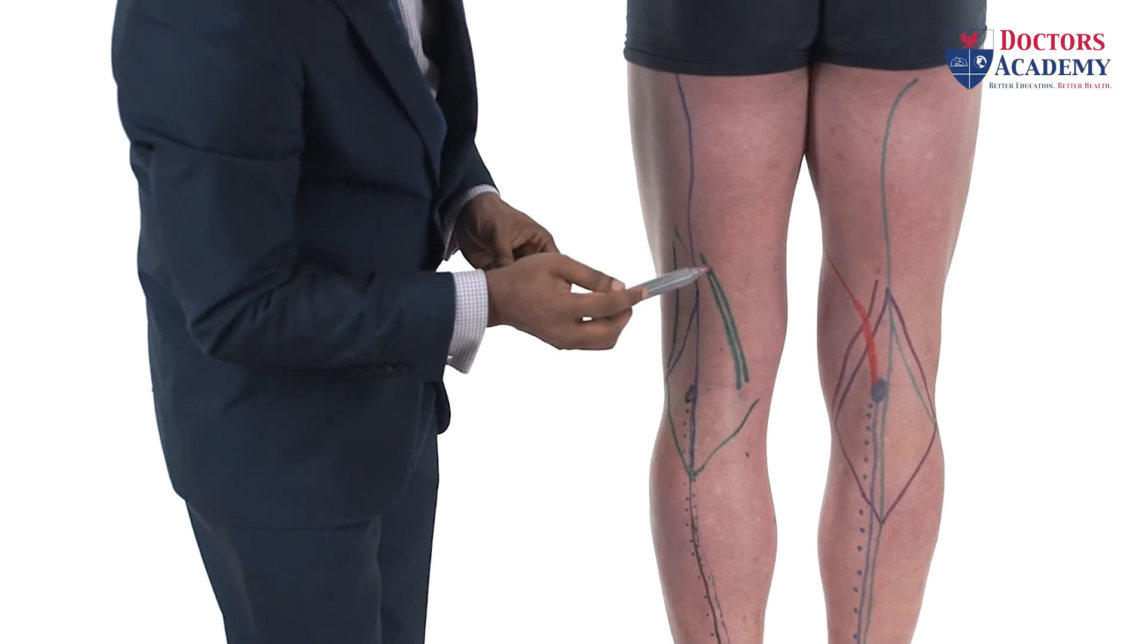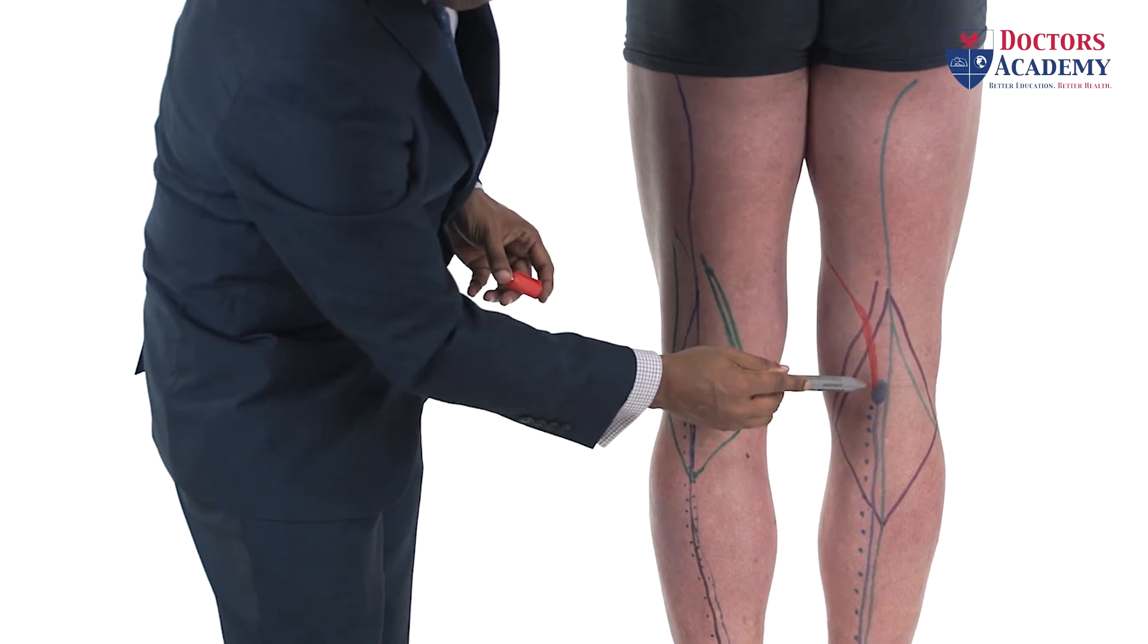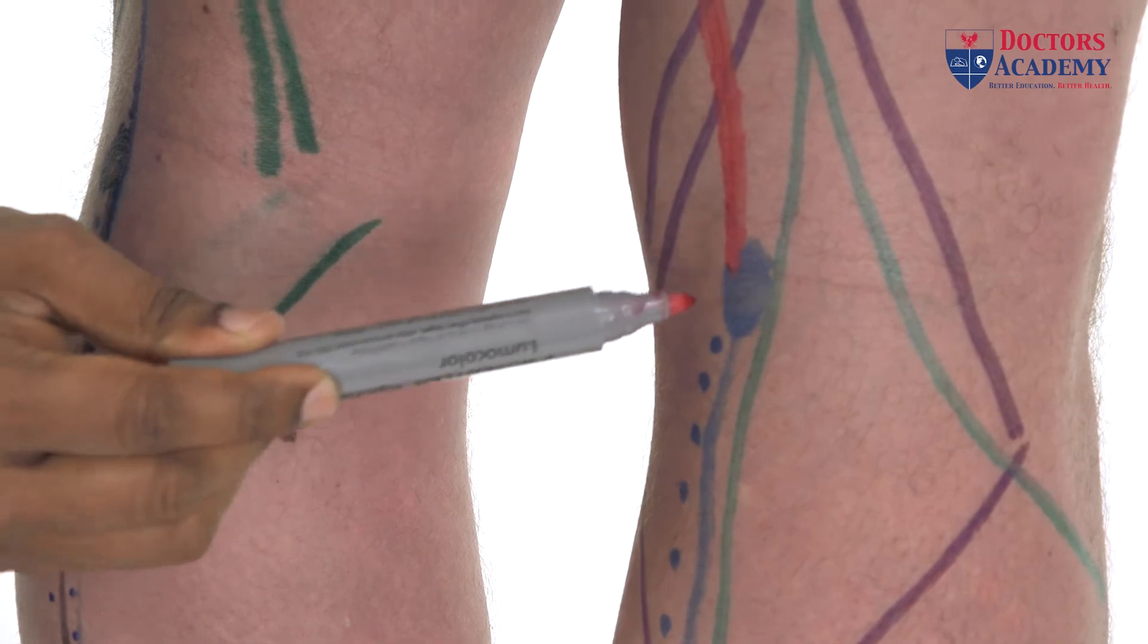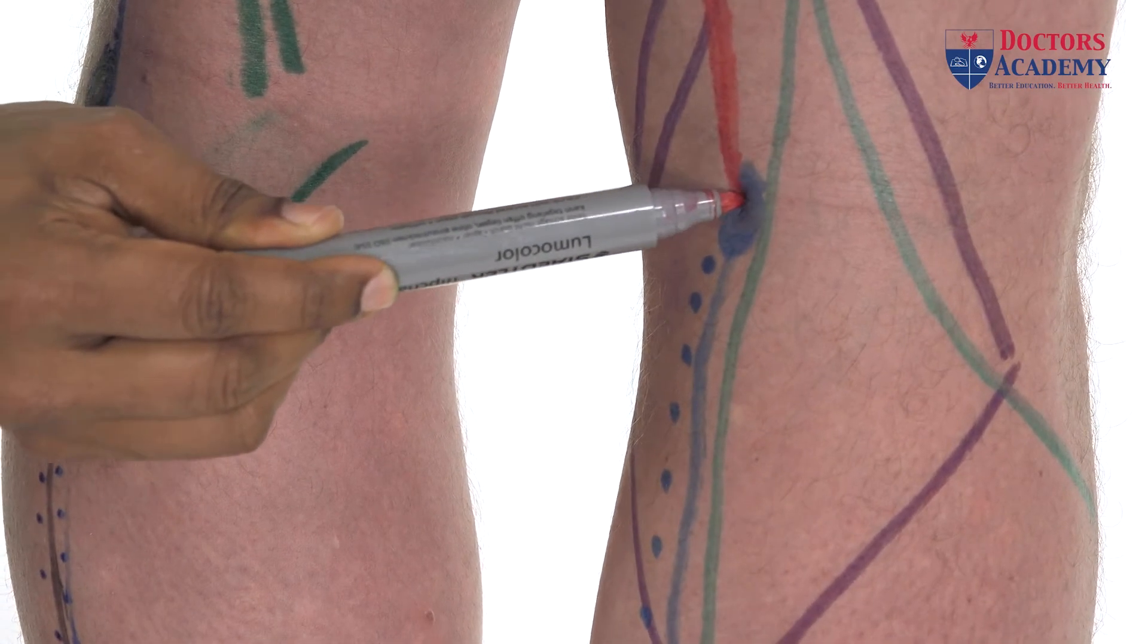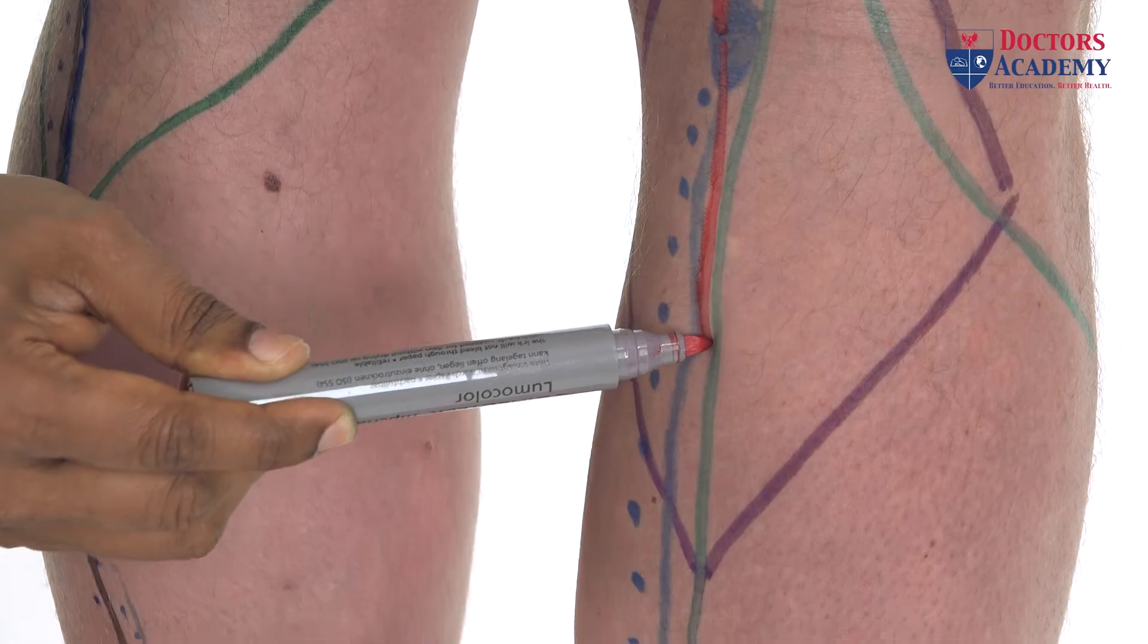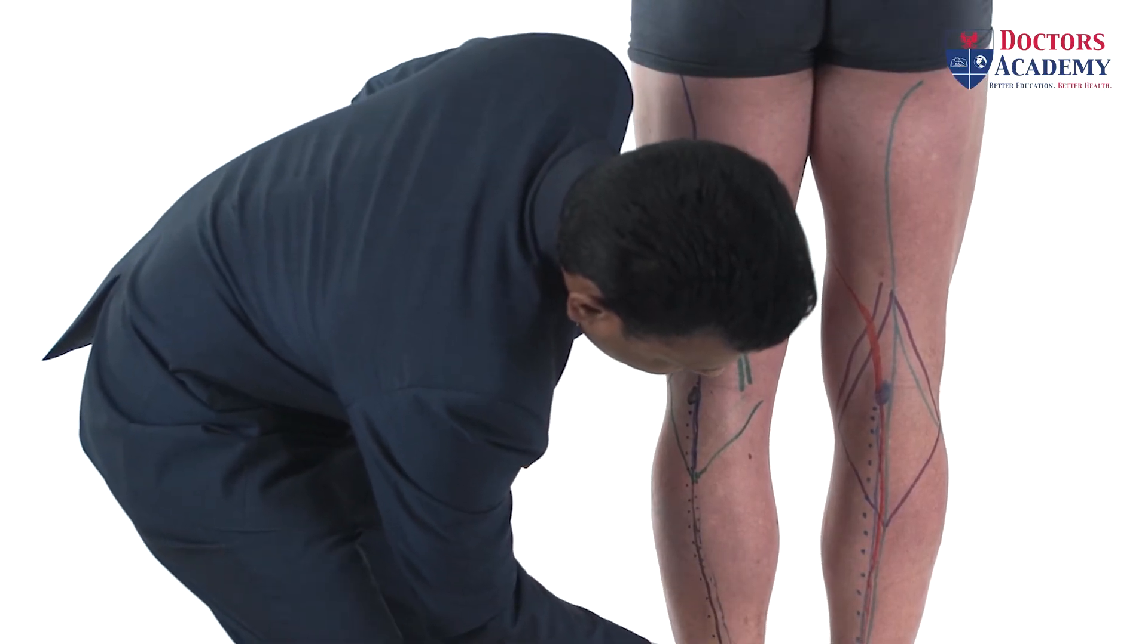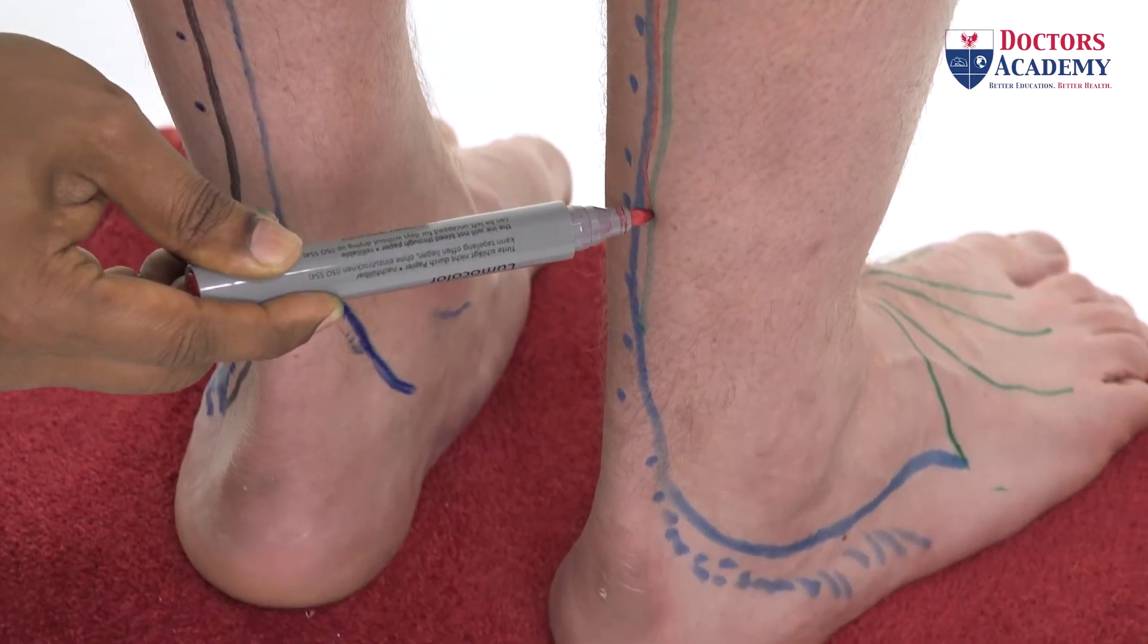If I mark it here, that will be the popliteal artery dividing into a posterior tibial which accompanies the tibial nerve all the way down. What I'm drawing now is the posterior tibial artery coming down this way.